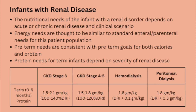For patients with renal disorders, nutritional needs depend on whether the renal disease is acute or chronic. Energy needs are thought to be very similar to standard enteral and parenteral recommendations. Preterm protein needs are consistent with preterm goals. Protein needs for term infants depend on severity of renal disease, with specific recommendations for chronic kidney disease stages 3, 4, and 5, as well as for those on hemodialysis and peritoneal dialysis.